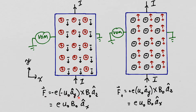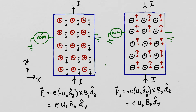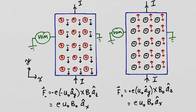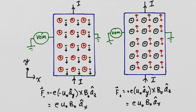The force QU cross B becomes EU sub zero times B sub zero in the X direction, which pushes the electrons to the right, making the left side of the gold positively charged and the right side negatively charged. If the current were due to positive charges, those charges move in the plus Y direction with velocity U sub zero in the Y direction. The QU cross B force would again be EU sub zero times B sub zero in the X direction, pushing the mobile positive charges to the right, making the left side negatively charged and the right side positively charged.